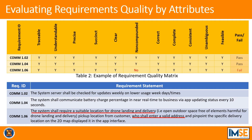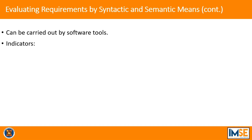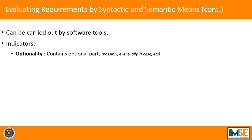The last method evaluates the quality of requirements through their syntactic and semantic attributes — evaluating requirements by recognizing certain syntactic or semantic traps used in them, such as certain words, phrases, or grammar. This method can be carried out by software tools and provides a quantitative, corrective, and repeatable evaluation of requirements documents using certain indicators. Optionality is when it contains optional parts with words like 'possibly,' 'eventually,' 'if case,' etc.